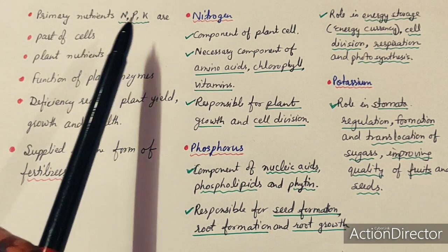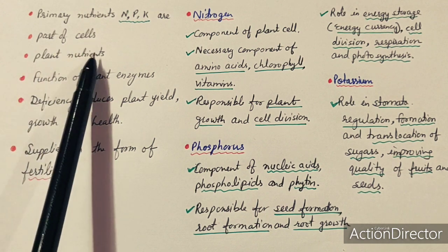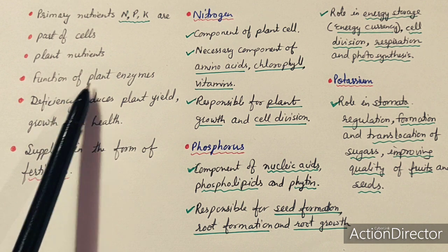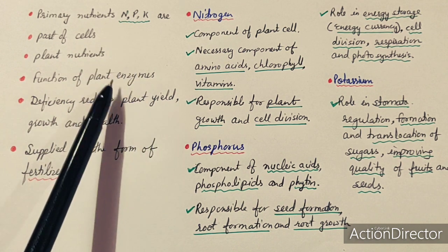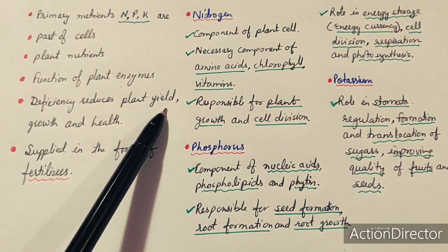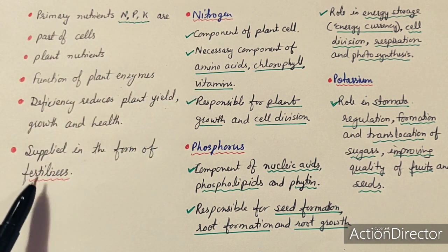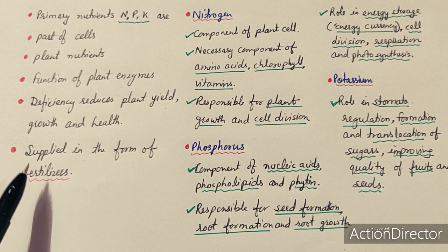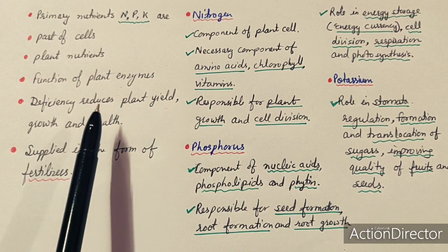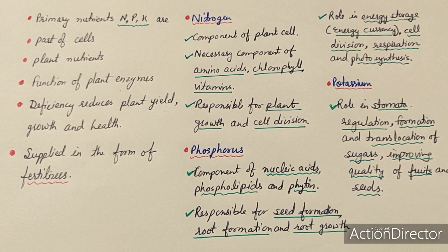Looking at the primary nutrients — N, P, K — these are part of the plant cell and function as plant enzymes. Some reactions inside the plant occur only in their presence. Their deficiency causes reduced plant yield, growth, and health. Generally, NPK can be supplied to the plant in the form of fertilizers. Because they are essential for cell components and enzymatic activity, if they are deficient in the soil, the plant takes them from the soil.